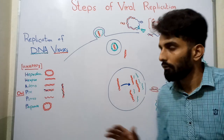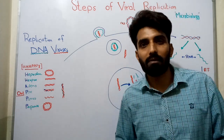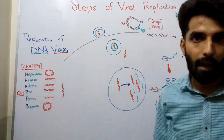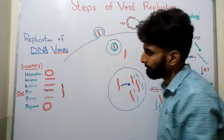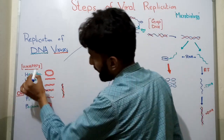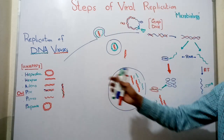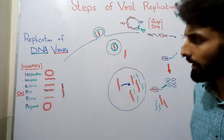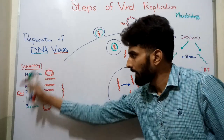Before moving toward the replication process, let's talk about some common examples of DNA viruses. To remember their names, here is a very important mnemonic: HAPPY. So these DNA viruses are very happy. H for HepaDNA, H for Herpes virus, A for Adenovirus, P for Pox virus, P for Parvo virus, and the last P is Papova virus.